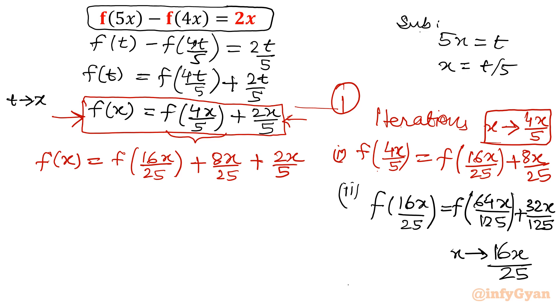Let us put it back here again. So f of x will become f of 64x over 125 plus 32x over 125. This is done. Plus 8x over 25 plus 2x over 5.